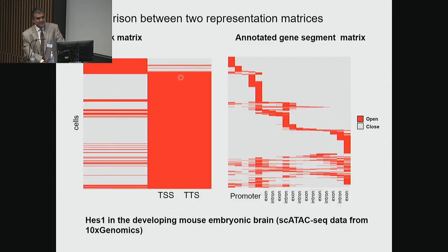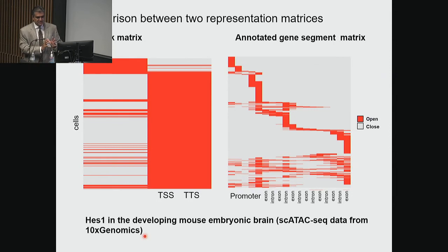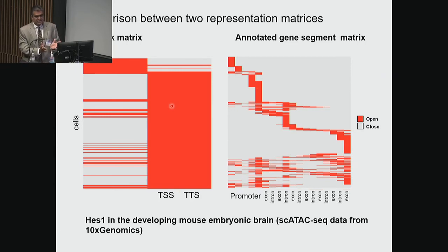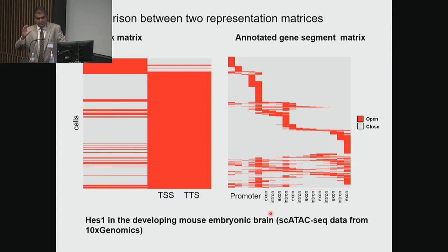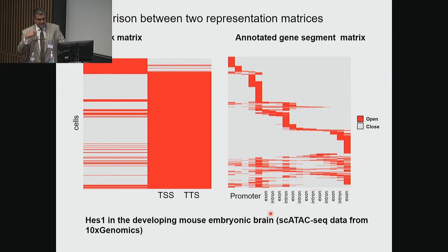Just coming up with this idea of how to represent the matrix — that's where we are right now. This is the same gene, HES1, a very important gene in the developing mouse and brain. This is single-cell ATAC-seq data from the 10x website. HES1 is part of the Notch pathway and helps drive differentiation. With the peak matrix, it doesn't have resolution to tell you where the chromatin is accessible. If you now look at exon and intron structure, it gives you much better resolution. Then you can sort the cells by where accessibility is taking place. We could look at intergenic regions, define certain enhancers, and certain epigenetic modification sites — maybe that would be a different approach to looking at single-cell ATAC-seq data than the peak matrix.